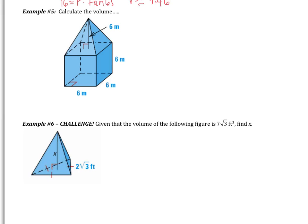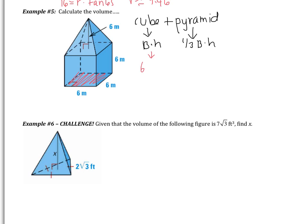Move on to number 5: calculate the volume. You'll notice that this is a composite solid — we took two solids and put them together to form a new solid. We have a cube with a pyramid added on top. I'll find the volume of the cube, and you do the pyramid. For the cube, the base is a square: 6 times 6, and the height is another 6. So the volume of the cube is 6 times 6 times 6, which ends up being 216.